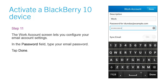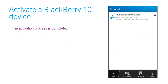Step 11: The Work Account screen lets you configure your email account settings. In the Password field, type your email password. Tap Done. The activation process is complete.